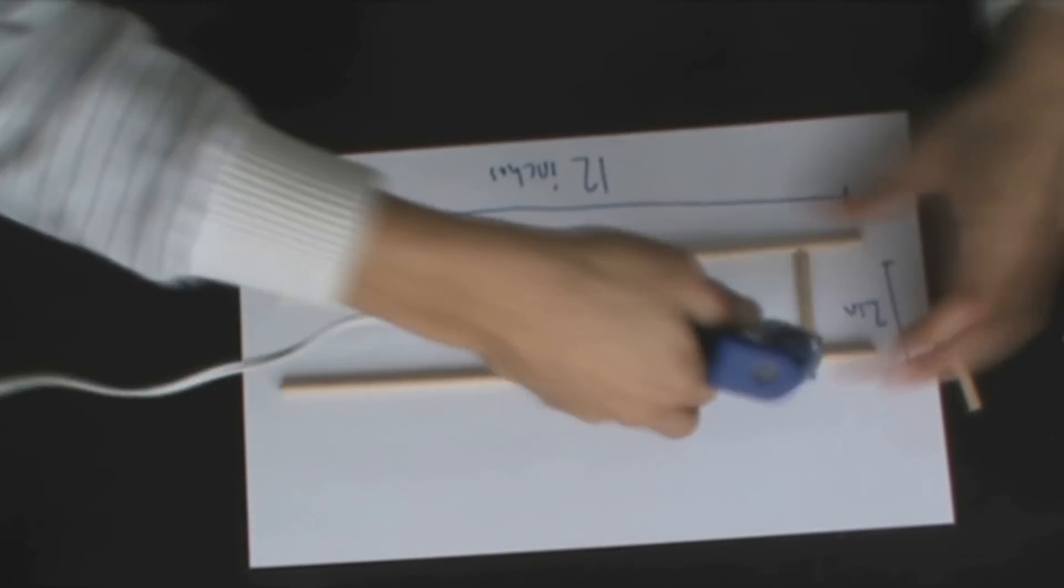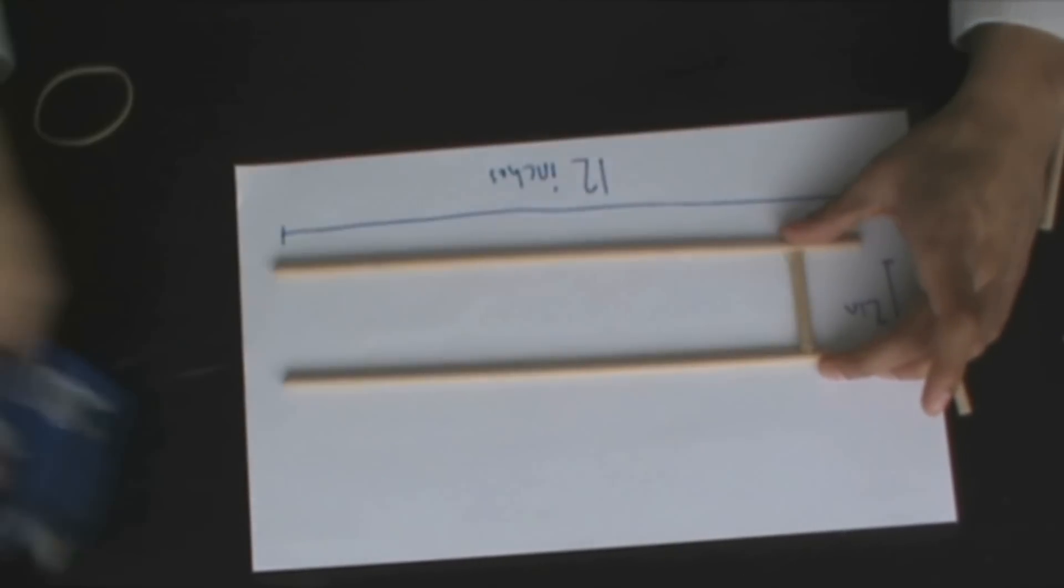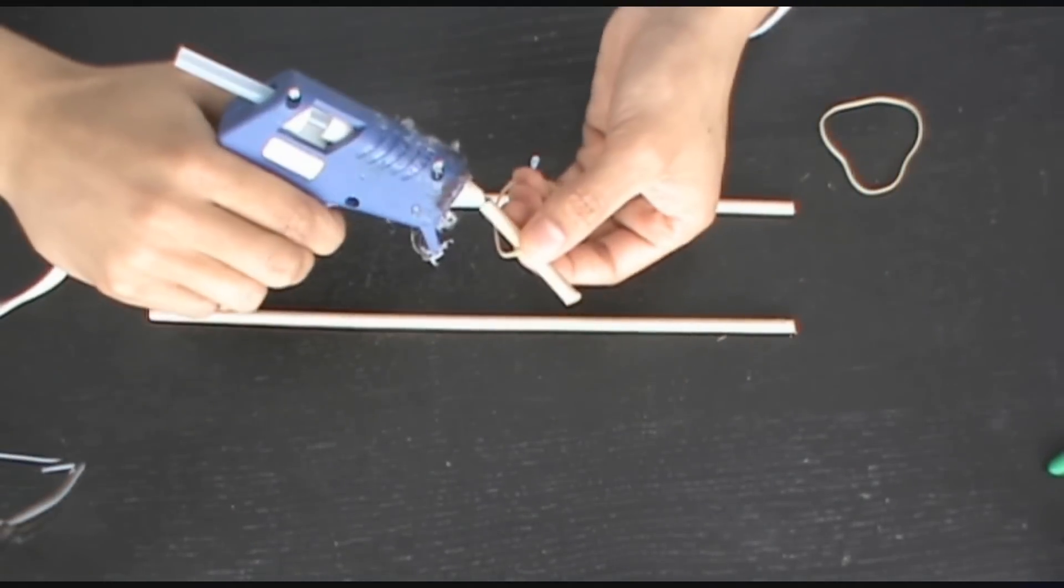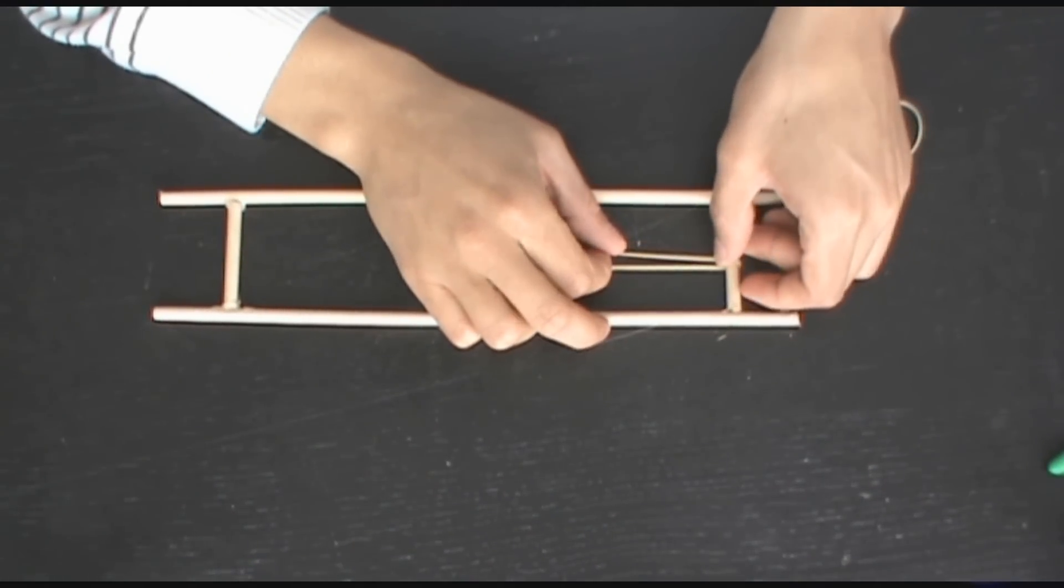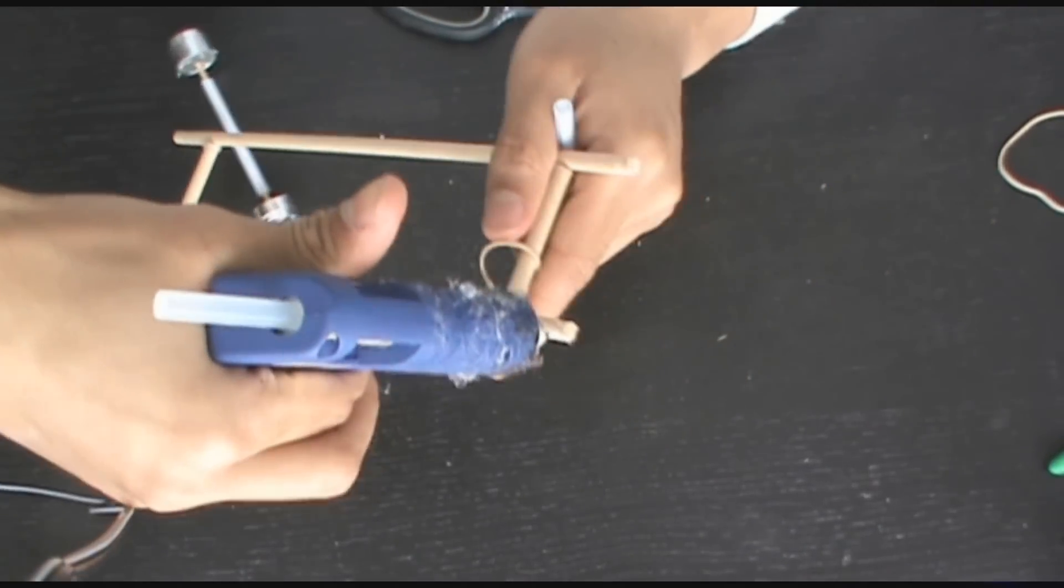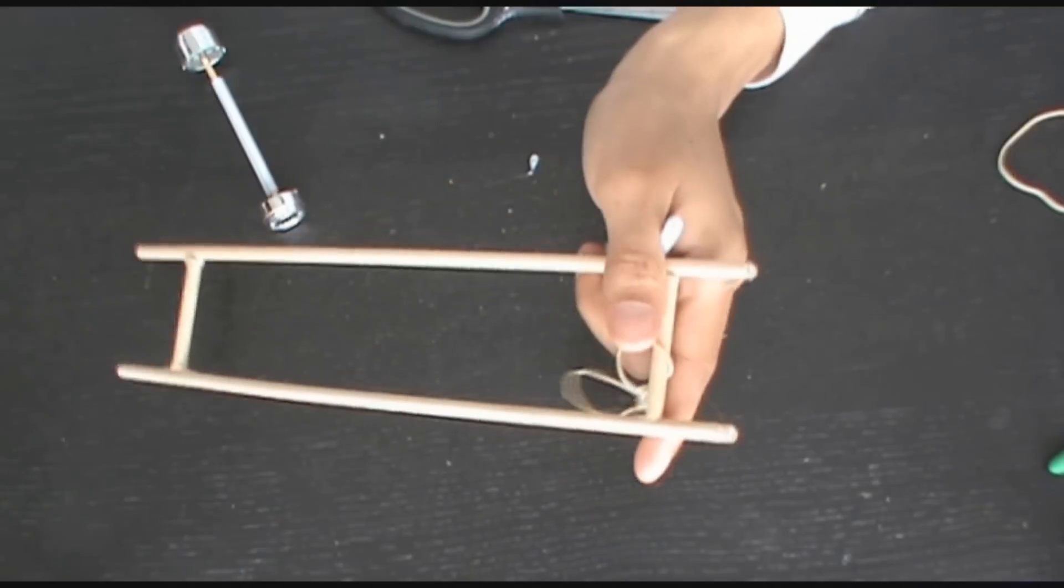So we're going to start this build off by building the base. For that we're going to need two large dowels and two shorter dowels. Now you can just disregard everything with the elastic band here. And now I'm going to cut out two straws and place one at each end.